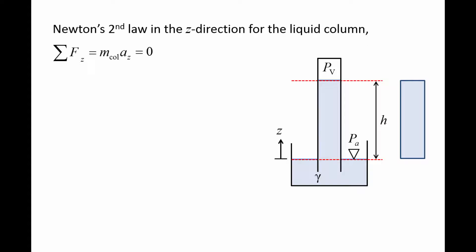Next, we identify the forces acting on the column in the free body diagram. The column's weight acts at the center of mass and points downward. The vapor pressure at the top of the column pushes downward with a force equal to PV times the column's cross-sectional area, A col.